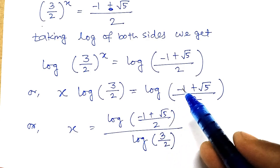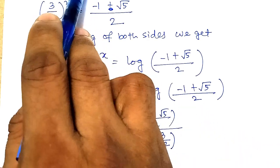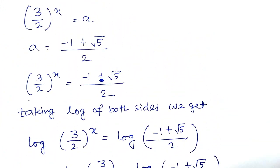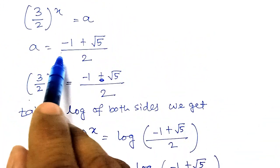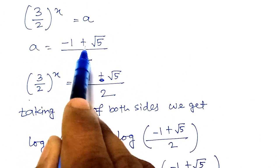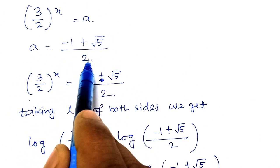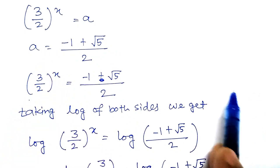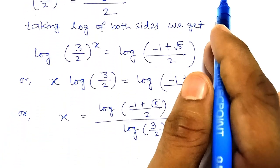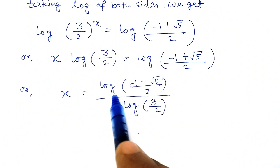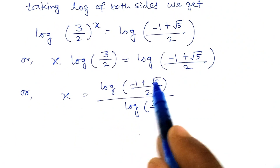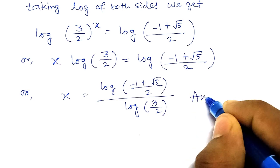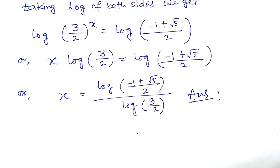For the second answer, the plus becomes minus since the second solution for a is (minus 1 minus root 5) divided by 2. Accordingly, the value of x is log[(minus 1 minus root 5)/2] divided by log(3/2). So these are the two answers for x.